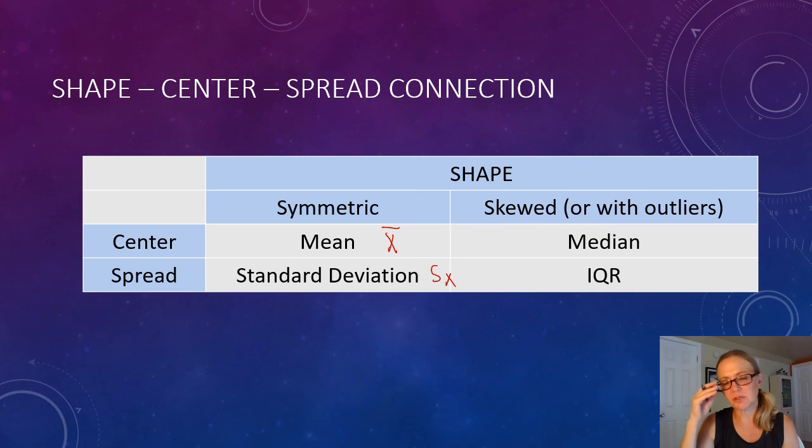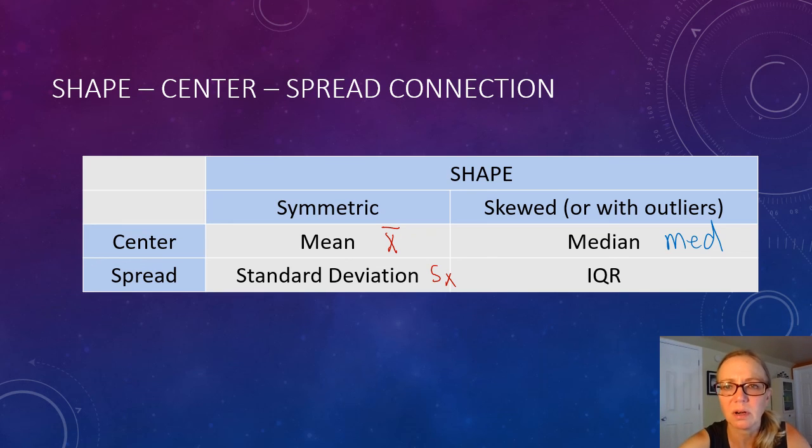When the shape of the distribution is skewed or not symmetric, or when it has outliers, for center, we use median, and that's MED on the calculator, and for spread, we use IQR, which is Q3 minus Q1, and you have to do that last little subtraction for yourself. This is what we needed to learn on the statistics and their connection to the shape of a distribution. Thank you for watching.